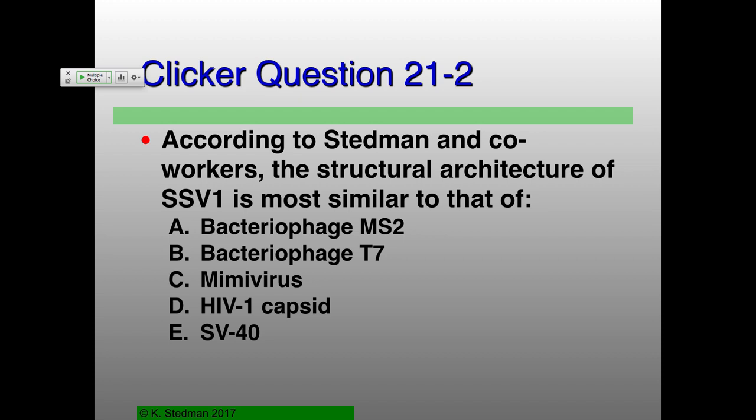Clicker question: according to Stedman and coworkers 2014, the structural architecture of SSV1 is most similar to which of the following: bacteriophage MS2, bacteriophage T7, mimivirus, HIV-1 capsid, or SV40?